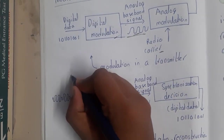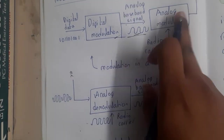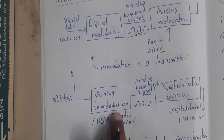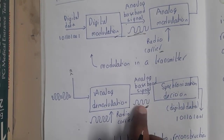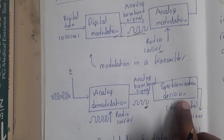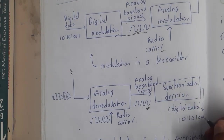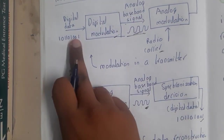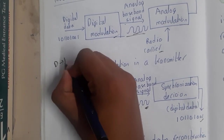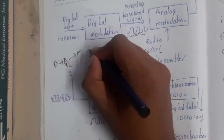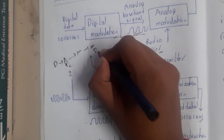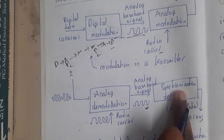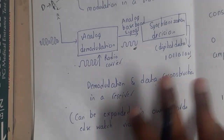This signal is collected by the receiver antenna on the other side and passed to an analog demodulator, which takes both the received signal and the same radio carrier as inputs to recover the original analog signal. That analog signal is then passed to a digital demodulator, and we get back our original data. So the flow is: digital → analog → combined with carrier → transmitted → received → demodulated back to analog → digital.